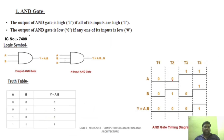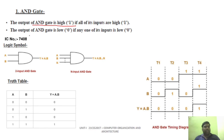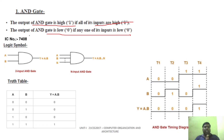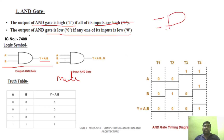First, we will start with the basic logic gates. The first gate is the AND gate. The output of the AND gate is high only when all the inputs are high. In all other combinations, the output is low. To make it very simple, remember binary multiplication — the AND gate represents multiplication. The AND gate symbol is shown here, with output A into B.